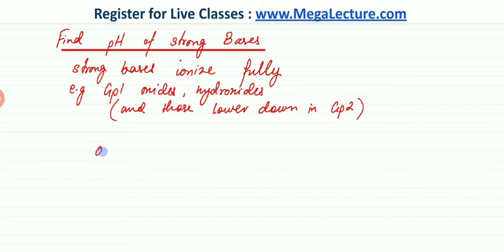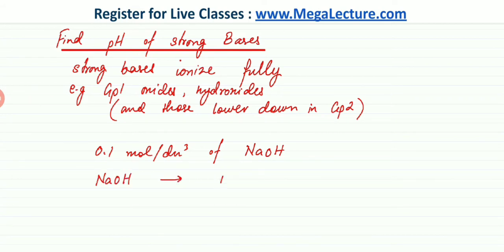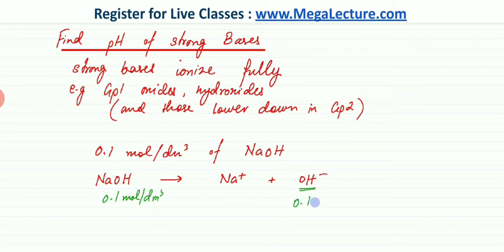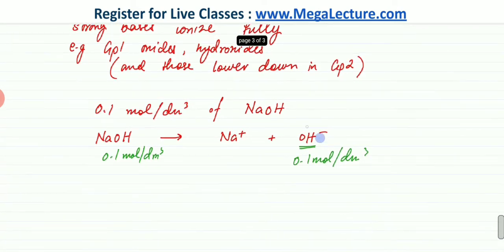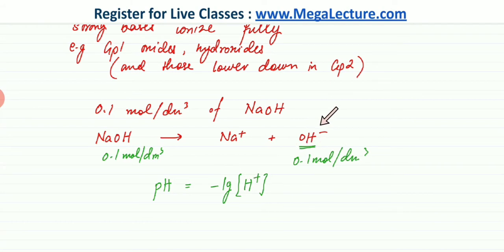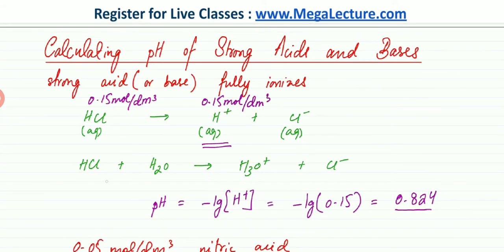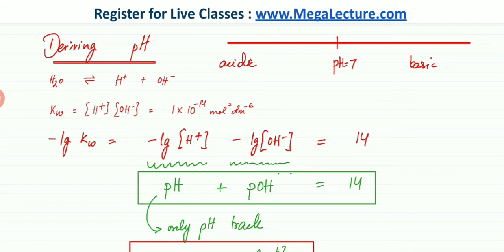Let's find the pH of 0.1 mol per dm³ NaOH. It's a group 1 hydroxide, so it dissociates fully. NaOH ionizes to produce Na⁺ and OH⁻. Since the concentration of the base is 0.1 mol per dm³ and it's fully ionizing, the concentration of OH⁻ ions is exactly the same — 0.1 mol per dm³.